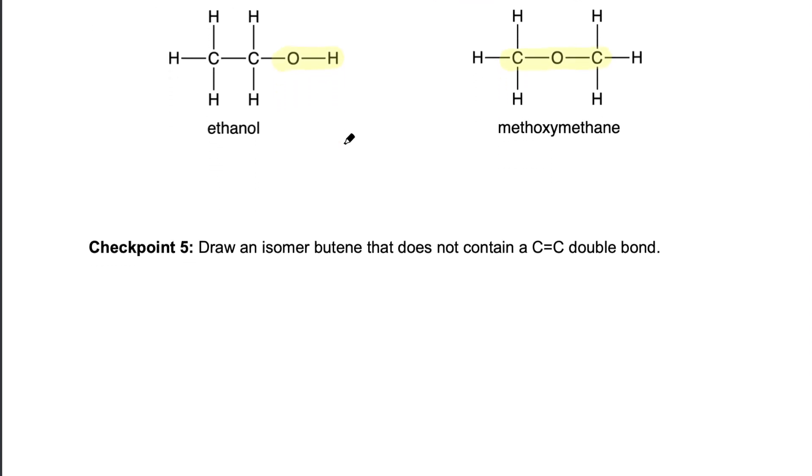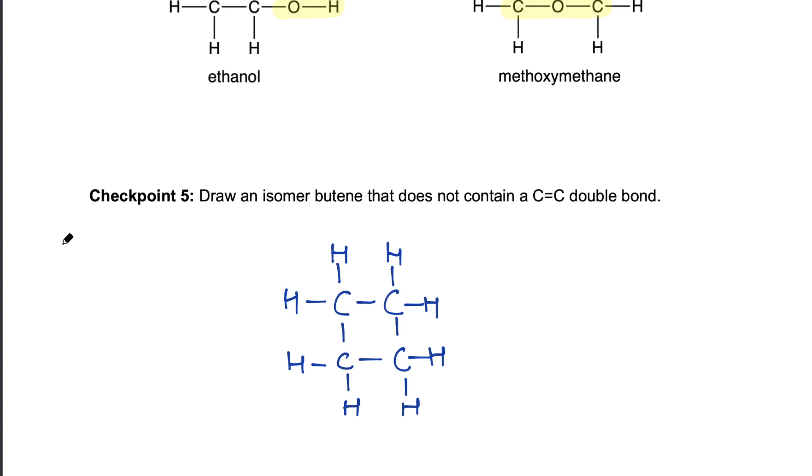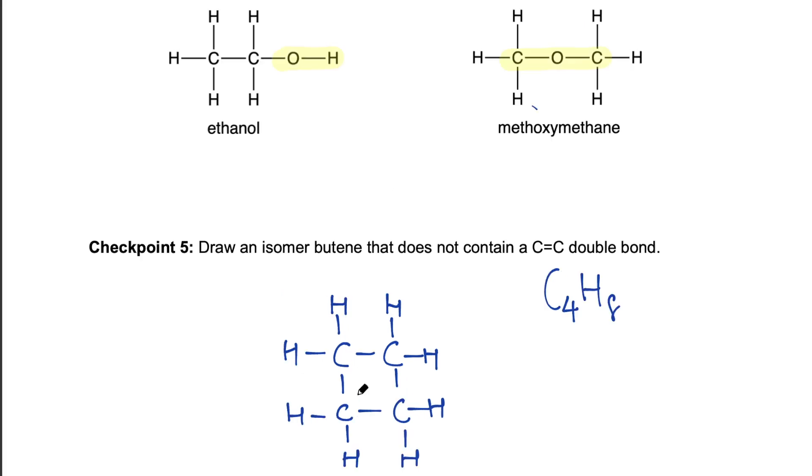Alkenes can also exhibit such kind of isomerism. What would be a functional group isomer of butene that doesn't contain the carbon-carbon double bond? This one requires a little bit of thinking out of the box. So we'll end up with something like that. Do you think it's possible? It satisfies the bonding rules, right? Carbon has four bonds, hydrogen has one. It has the same molecular formula as butene, C4H8, but a different structural formula and the double bond is gone. So we have a totally different molecule here. We call it cyclobutane.